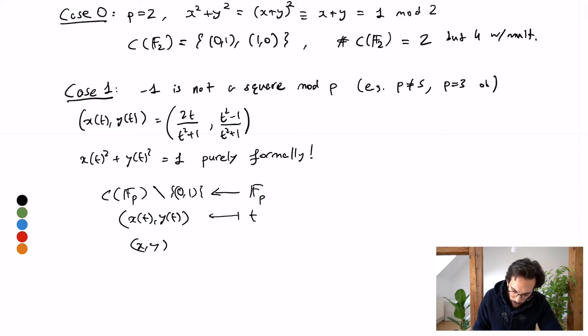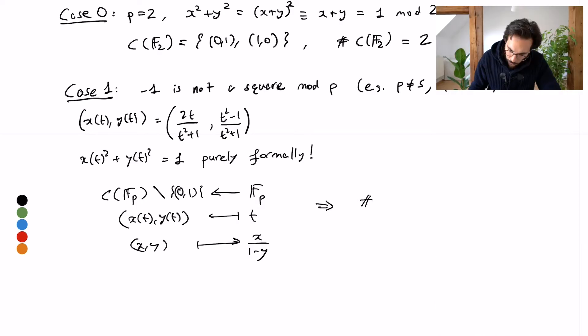And conversely I can write (x,y) goes to, as before, x over one minus y. So this is again a formal inverse and it will work. This means I've established the bijection between the set of points on my circle and F_p modulo this one point. Therefore the number of points on my finite field plus one for the north pole, and this gives me p plus one points.